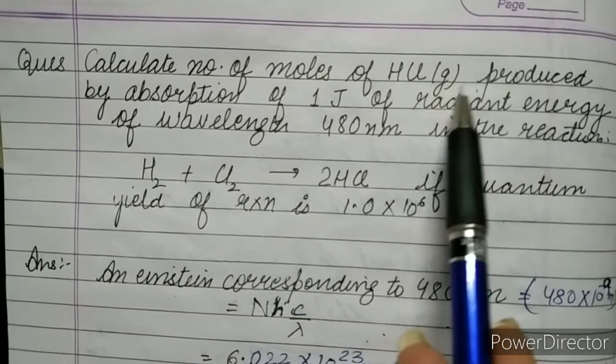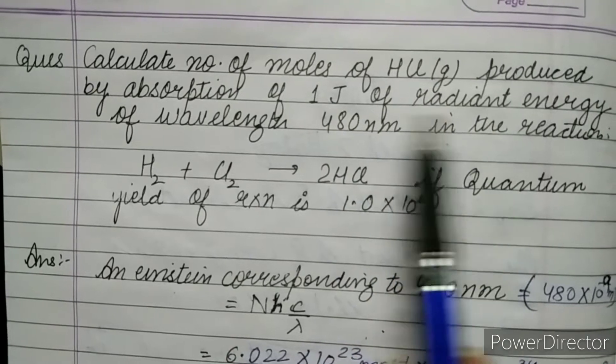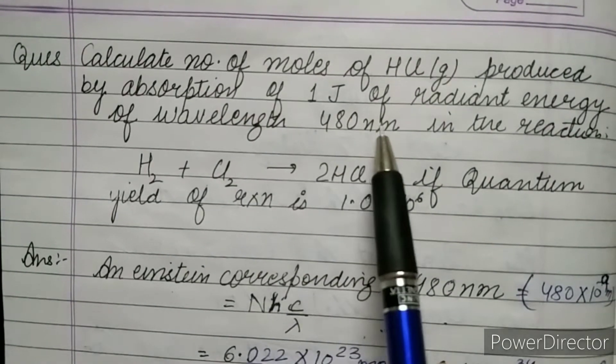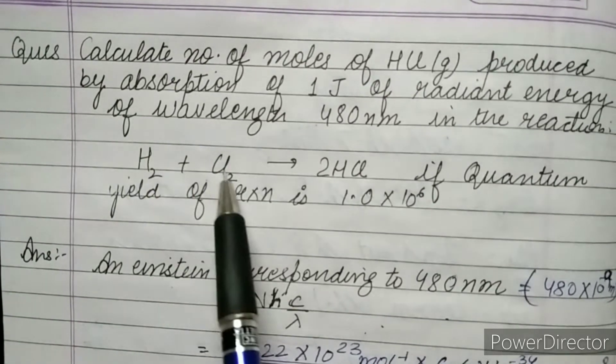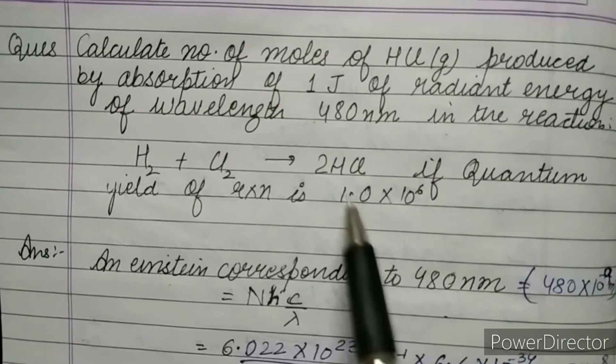The reaction is H₂ + Cl₂ which gives you 2HCl, and the quantum yield is 1.0 × 10⁶. So firstly we are going to find out the einsteins corresponding to 480 nanometer.